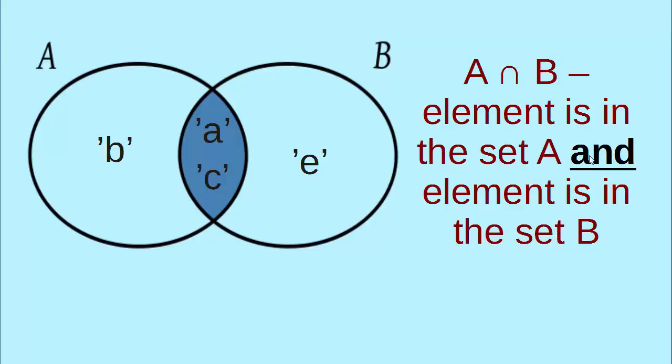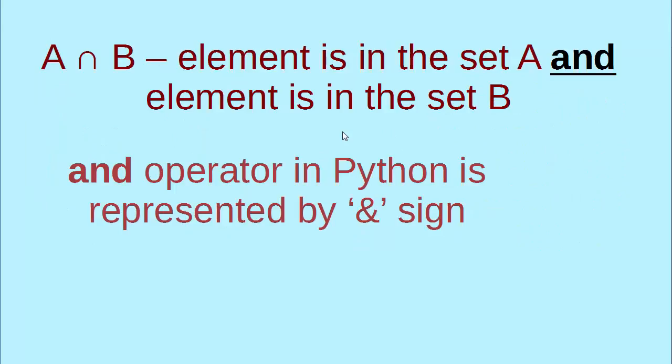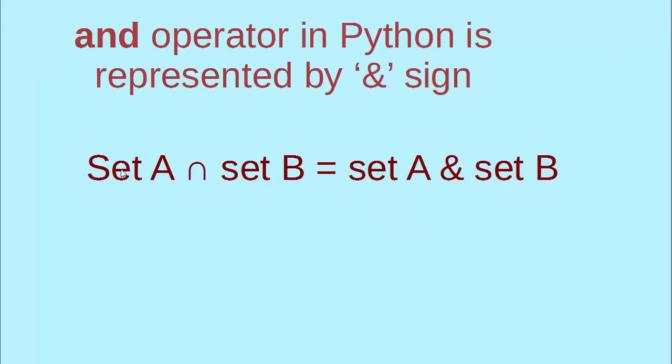So we need to implement our intersection with AND operator in Python. And we know that AND operator in Python is represented by ampersand sign. So we could implement set A intersect set B as set A ampersand set B.